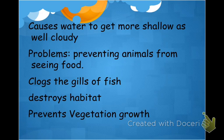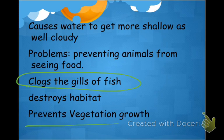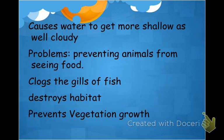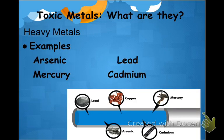Sediment causes multiple problems. It clogs fish gills, makes water very cloudy which prevents fish from seeing their food, and causes water to become more shallow as dirt piles up. Sediment also blocks sunlight, which prevents aquatic vegetation from performing photosynthesis. Sediments can be a bigger issue than many people recognize, and they are the number one source of pollution in North Carolina.